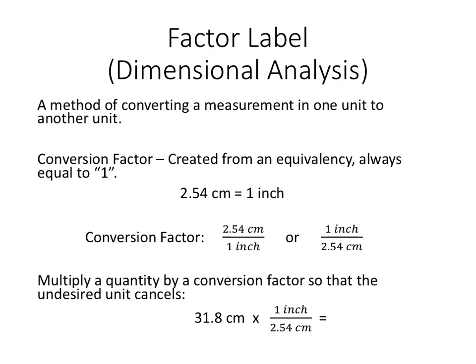Start with factor label. Your book and some other places call it dimensional analysis. We typically call it factor label. It's just a method of converting one measurement into another, from one unit into another. We need conversion factors created from an equivalency and it's always equal to 1. So the equivalency here we're going to use is 2.54 centimeters is an inch.